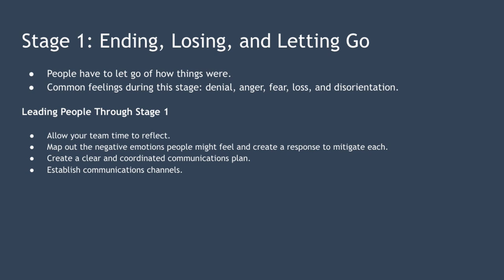How do you lead people through stage one? People can't accept the change until they accept that the old way is ending. If you attempt to push through change without acknowledging people's emotions, you're likely to encounter resistance throughout the whole change process. Mechanisms leadership teams can use to manage this stage include allowing your team time to reflect.